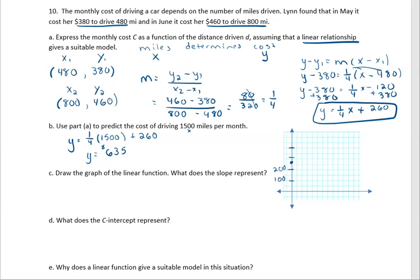We also have another point we could put in. We know that when we have 1500 miles, we also have a cost of $635. Here's our first point, here's our second point, and there's the equation of our line.